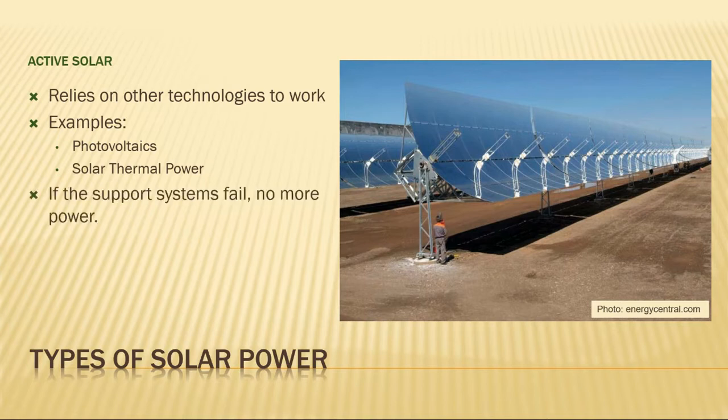Active solar technologies like these rely on the larger system to work. The photovoltaic panels have no moving parts, so they are unlikely to break, but these systems also include inverters and storage batteries, which have the potential to fail. Solar thermal plants rely on a large infrastructure to operate, which could be interrupted by mechanical issues.